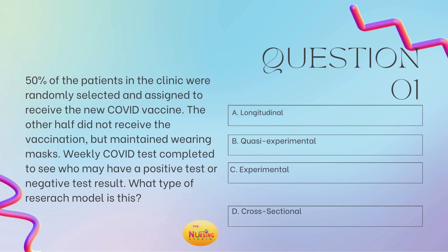Question number one states: 50% of the patients in the clinic were randomly selected and assigned to receive the new COVID vaccine. The other half did not receive the vaccination but maintained wearing masks. Weekly COVID tests were completed to see who may have a positive or negative test result. What type of research model is this? Is it A, longitudinal; B, quasi-experimental; C, experimental; or D, cross-sectional? Take a moment and tell me what you got in the comments.